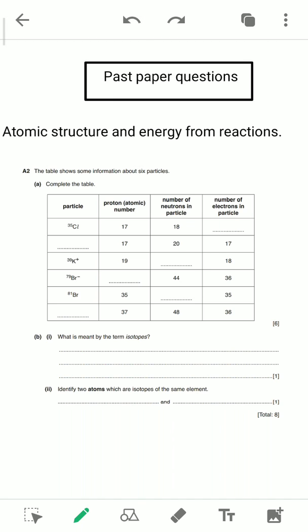So coming to the other parts, what is meant by the term isotopes? So it's simple. You have to just tell the definition of the isotopes, what are isotopes. And then the second part is identify two items which are isotopes of the same element. Okay, this question you have to use the help of the table.